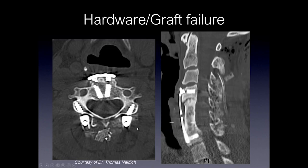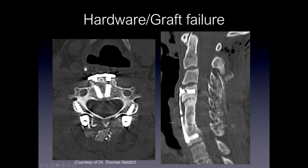Here's an example of hardware or graft failure in a patient who had both anterior and posterior fusion. There is fracturing of the vertebral screws, visible on both the axial and sagittal images. Looking at the fibular strut graft, there's good fusion along the inferior aspect of the corpectomy, but along the superior aspect there is lucency — consistent with some level of pseudoarthrosis and motion which resulted in fracturing of these screws. The patient ultimately underwent posterior fusion to secure the construct and reduce instability.